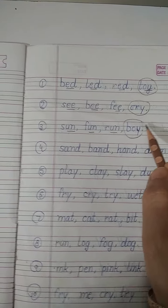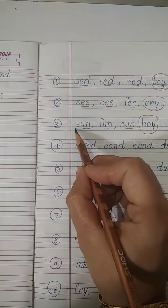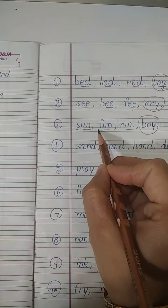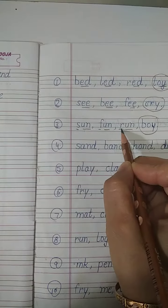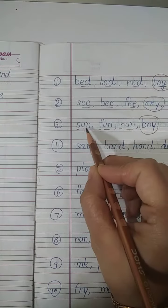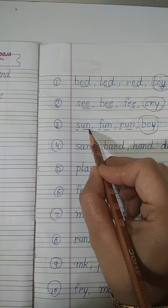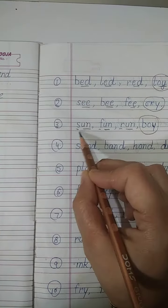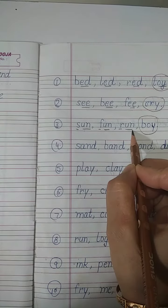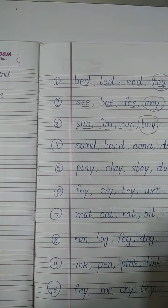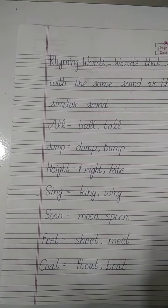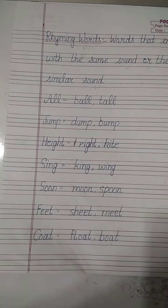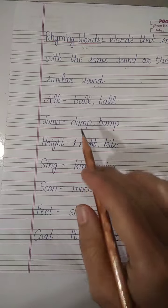You can see that the beginning letters are different but the ending letters are the same — these are the rhyming words. You can create your own rhyming words. For example: